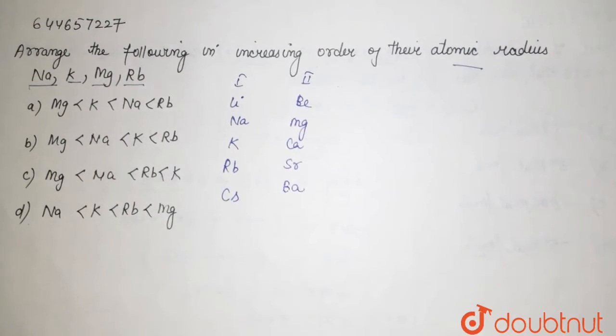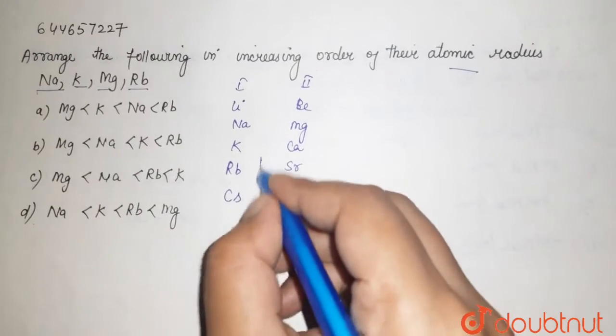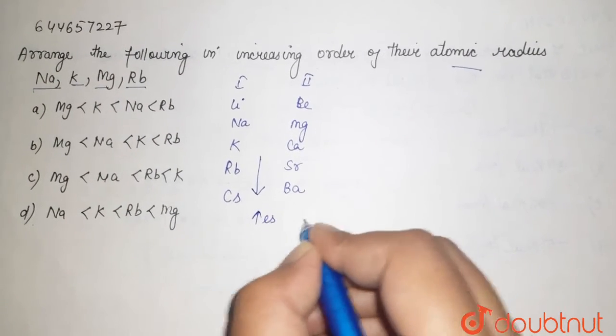Fine. Now if you see, when we move down the group, your size increases. Why? Because your number of shells increases.